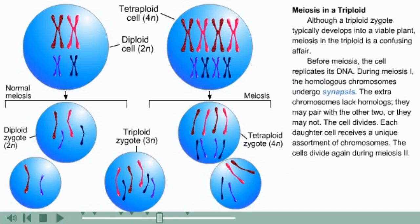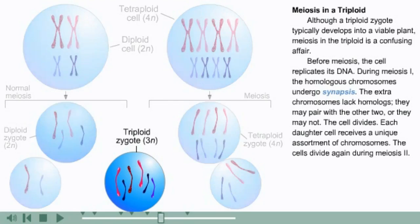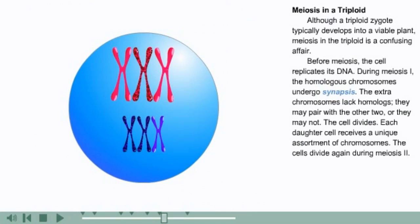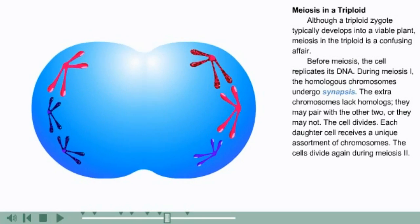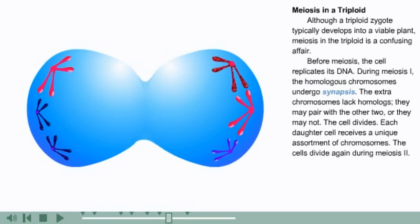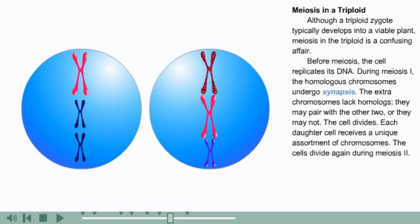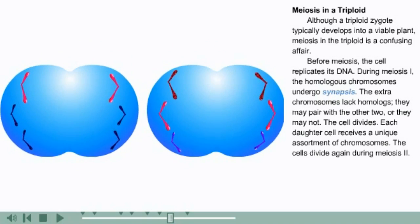Although a triploid zygote typically develops into a viable plant, meiosis in the triploid is a confusing affair. Before meiosis, the cell replicates its DNA. During meiosis one, the homologous chromosomes undergo synapsis. The extra chromosomes lack homologs; they may pair with the other two or they may not. The cell divides, and each daughter cell receives a unique assortment of chromosomes. The cells divide again during meiosis two.